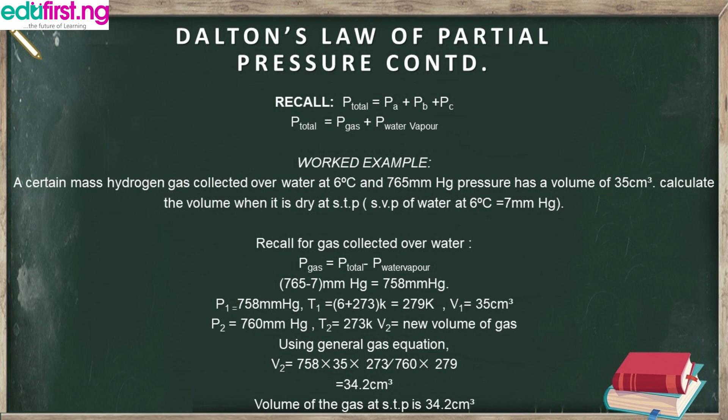There are things to note when interpreting this question. Since the gas was collected over water, the formula we use is P_total equals P_gas plus P_water_vapor. In this question we're looking for volume — we have V₁, P₁, and temperature — so we'll be using the General Gas Equation. But before we can find the volume, we also need to find the pressure of the gas.